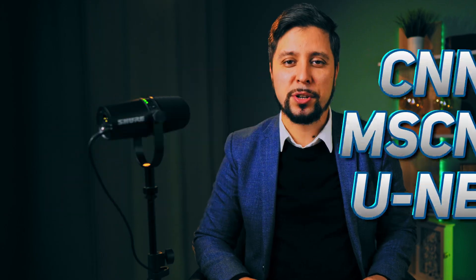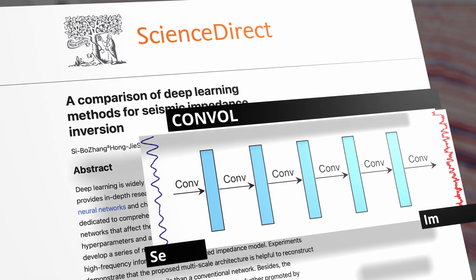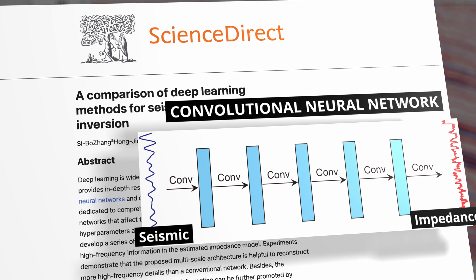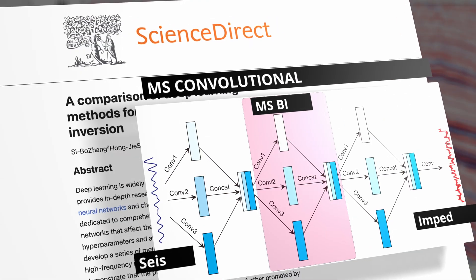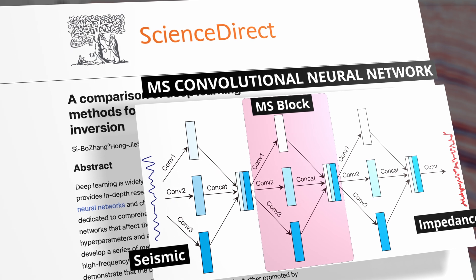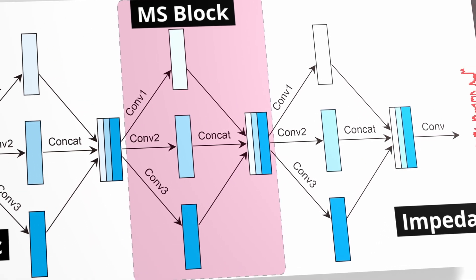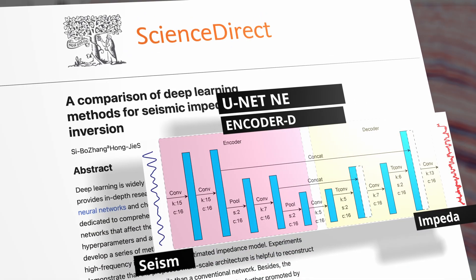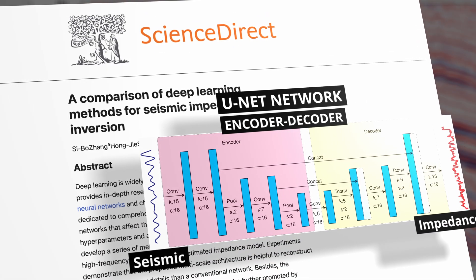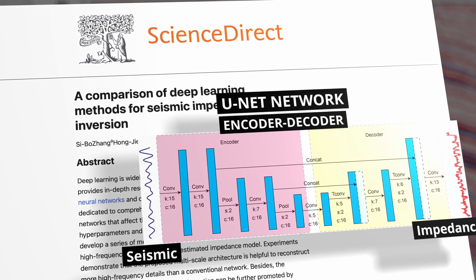Let's start by figuring out which architecture is better for our task. This small competition has three architectures. The first is a convolutional neural network — a pretty old and simple realization. The second is a modified CNN with multi-scale blocks added; it can pull out multi-scale features from seismic traces and create impedance with convolutional layers. The third is UNet, another multi-scale architecture with encoder and decoder parts that helps reconstruct high-resolution information.